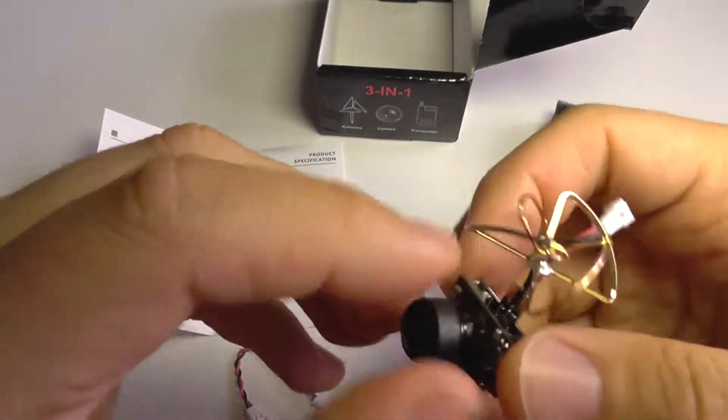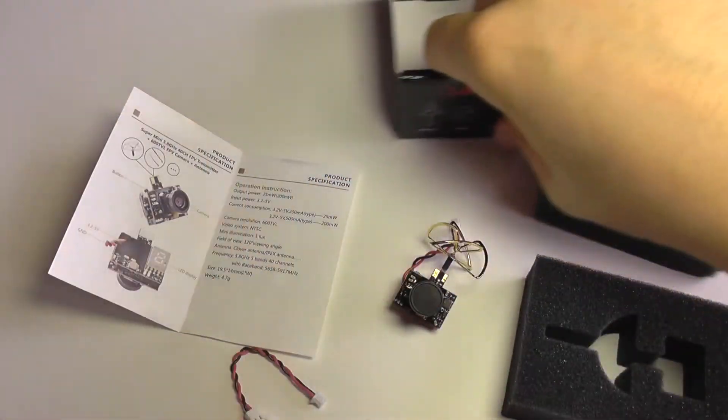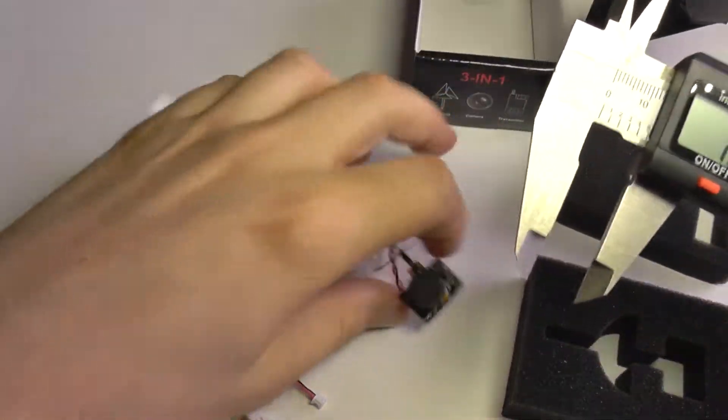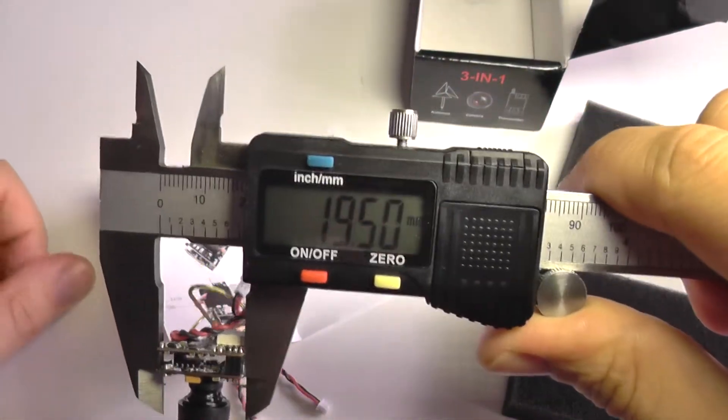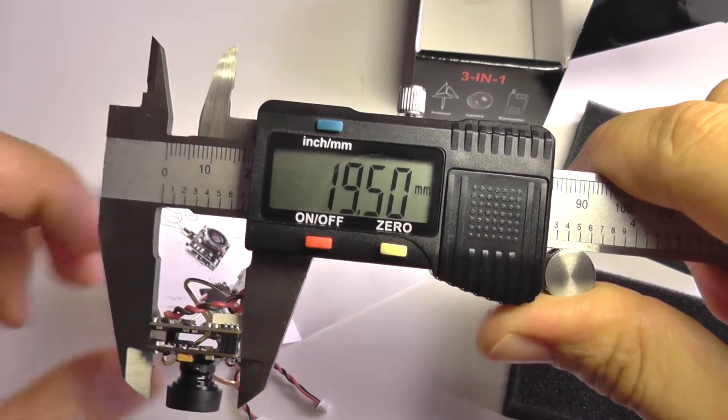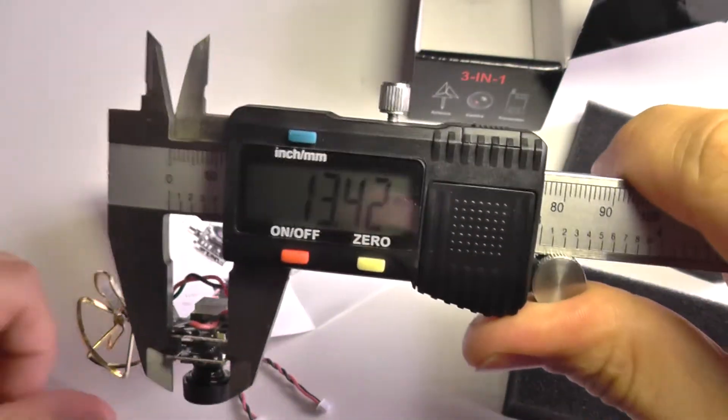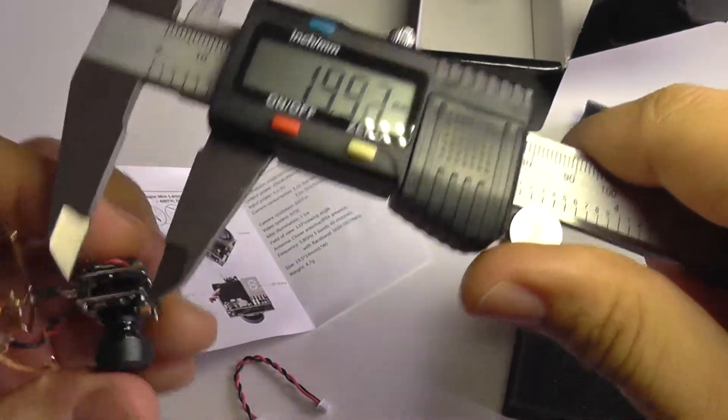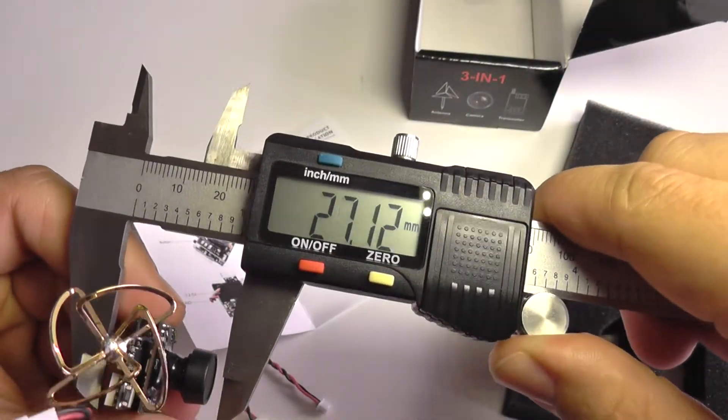So this is the camera, this is how it looks - very compact as you can see. Let's take a look at those sizes. It's only 19.5 millimeters wide and only 30.42 wide.